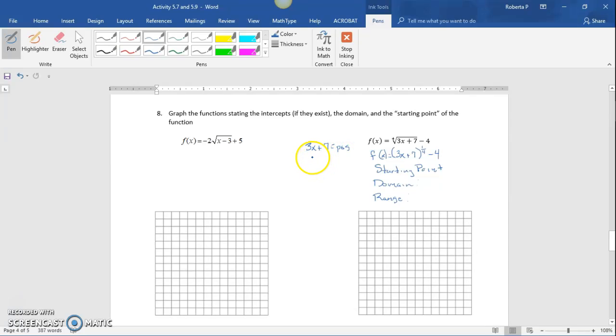The first non-negative number is 0, so 3x plus 7 equals 0, which means 3x equals negative 7, and x equals negative 7/3.